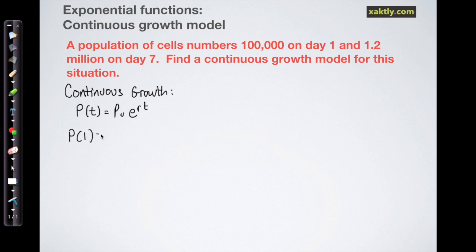Now what we know from the data here is that P(1) for one year is equal to 100,000 and I'll just write that as 0.1 million, and P(7) is equal to 1.2 million. I'm using millions here so that I don't have to write out so many zeros.